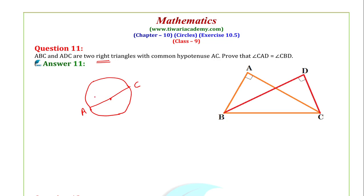One angle is ABC — let this be ABC. And doosra jo angle hai, that is ADC. Isko B maan lete hai. ABC and here is the point — let this point be D. It is given that ABC and ADC are two right angles, yani this is 90 degree and this is 90 degree.